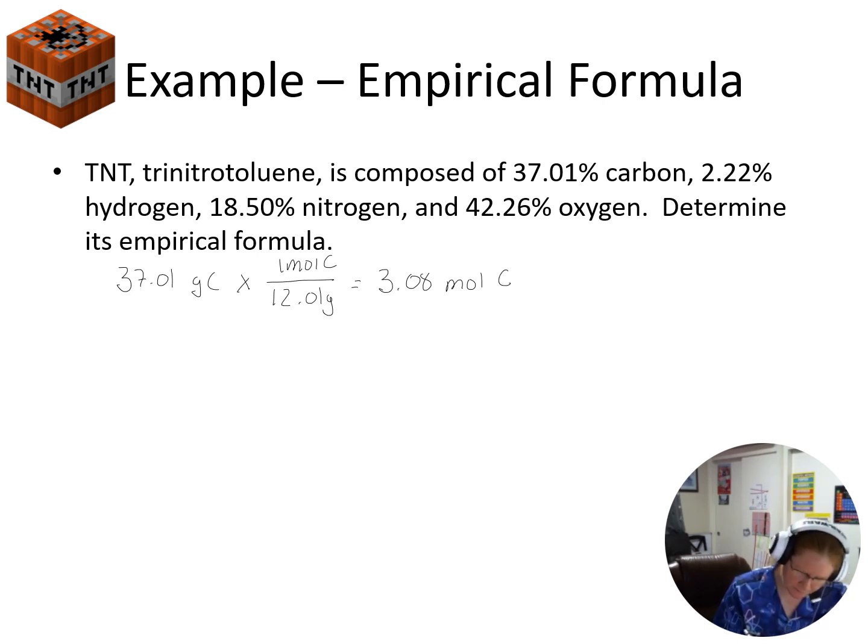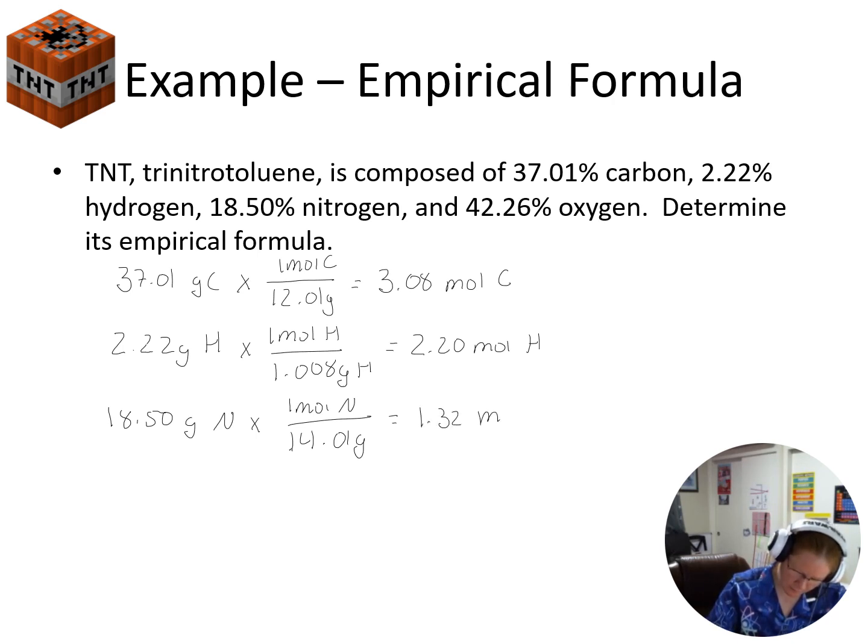Next, we have our 2.22 grams of hydrogen. And we get 2.20 moles. 18.50 grams of nitrogen. And 14.01 grams. We get 1.32. And then finally, 42.26 grams of oxygen. One mole oxygen in 16 grams. And we get 2.64.